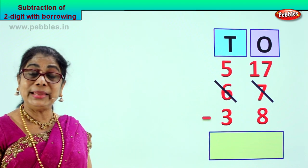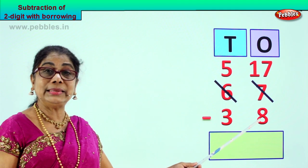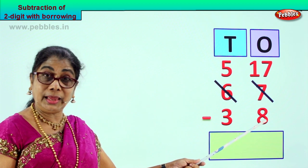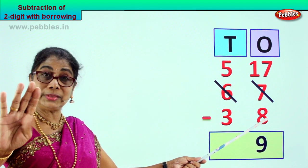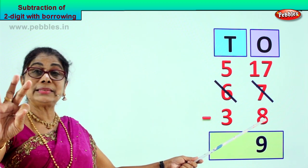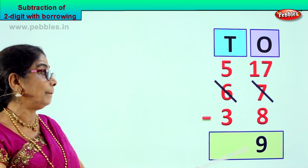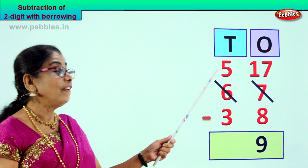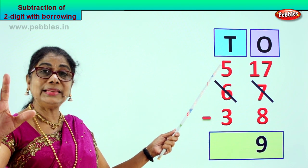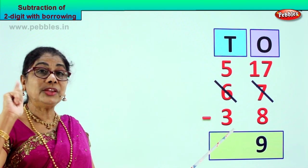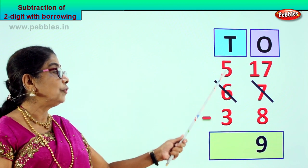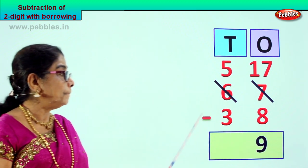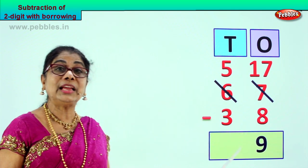Now we minus: 17 minus 8. 17 take away 8 — counting up: 8, 9, 10, 11, 12, 13, 14, 15, 16, 17 — that is 9. You get 9. 17 minus 8 is 9. And here 5 minus 3 — 1, 2, 3 — your answer is 2. 67 minus 38 is 29.